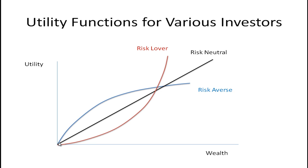What do we mean by diminishing marginal utility? As your wealth goes up, the curve starts to get flatter. That means you get more extra utility — more extra satisfaction — from a dollar increase in wealth when you have very little money. But as you become wealthier, a dollar increase in your wealth doesn't add much utility or satisfaction.